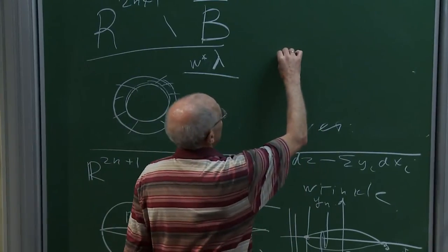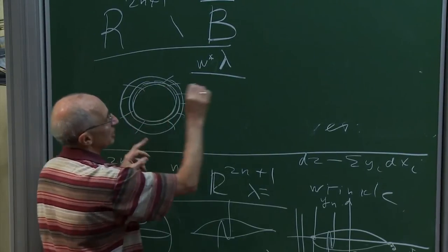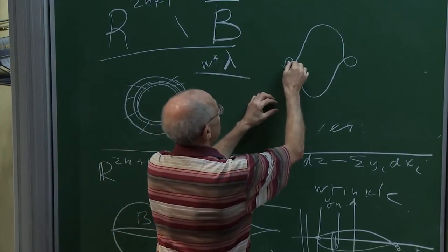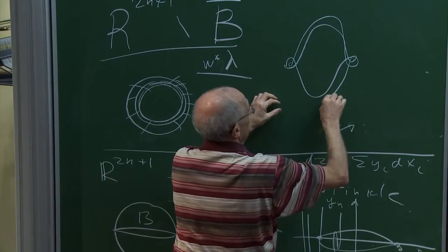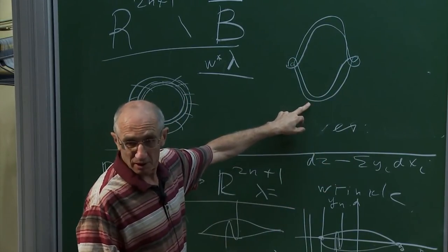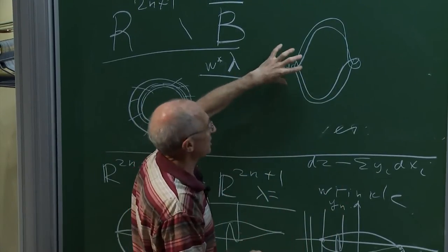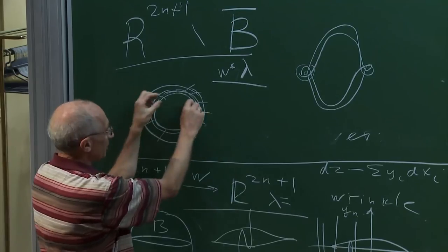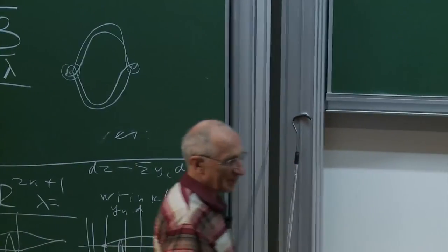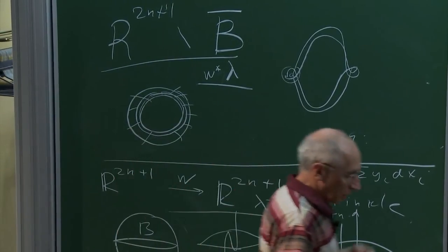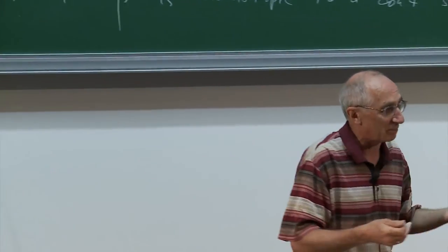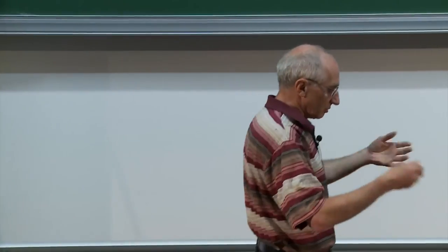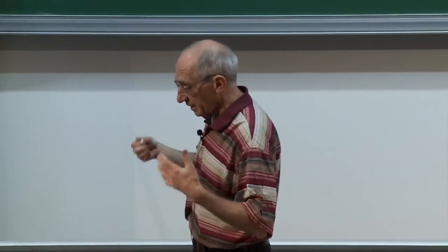As you approach the singularity, concentric spheres in the image start to look like the characteristic foliation of the over-twisted disk. For every dimension there is some critical smallness of this loop — you don't need to embed all the way to the boundary, just sufficiently small. It turns out that over-twisted contact structures satisfy a complete H-principle: the classification of over-twisted contact structures up to homotopy in the class of almost-contact structures is the same as the isotopy classification.